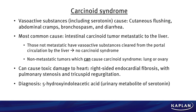Carcinoid syndrome can cause toxic damage to the heart, causing right-sided endocardial fibrosis, with pulmonary stenosis and tricuspid regurgitation. The diagnosis is based upon a urinary metabolite of serotonin, which is secreted by the carcinoid tumor.